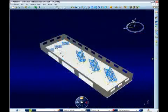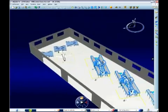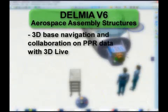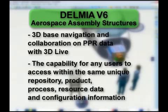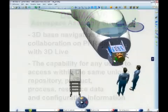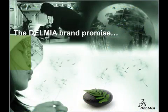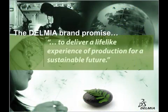As a summary, this demonstration has illustrated the following key V6 values: 3D-based navigation and collaboration on PPR data with 3D Live; the capability for any user to access, within the same unique repository, product, process, and resource data, and configuration information. Delmia Digital Manufacturing Solutions — a lifelike experience of production for a sustainable future.